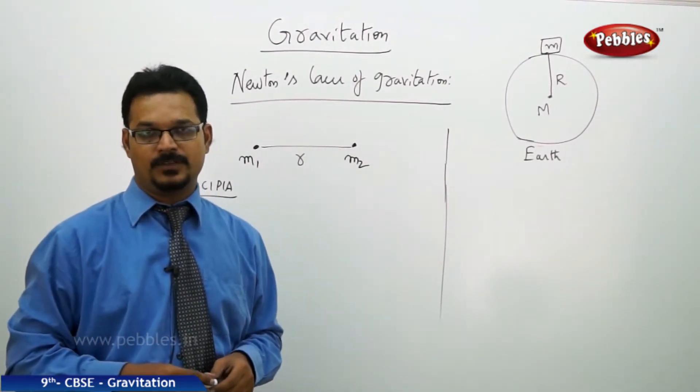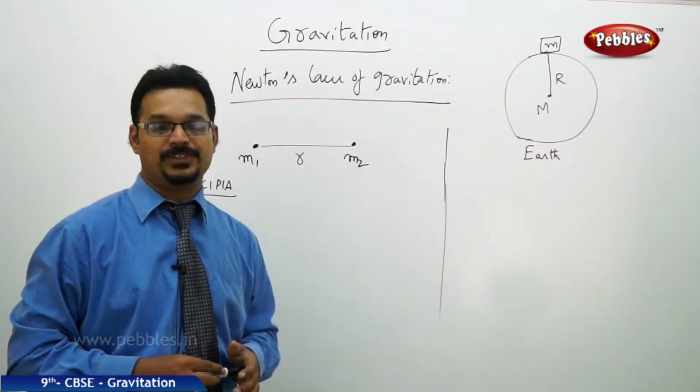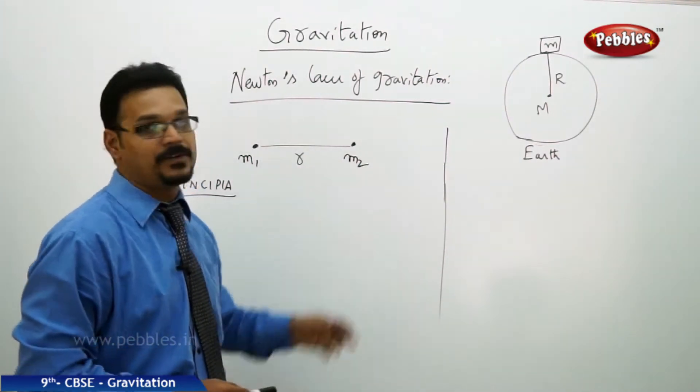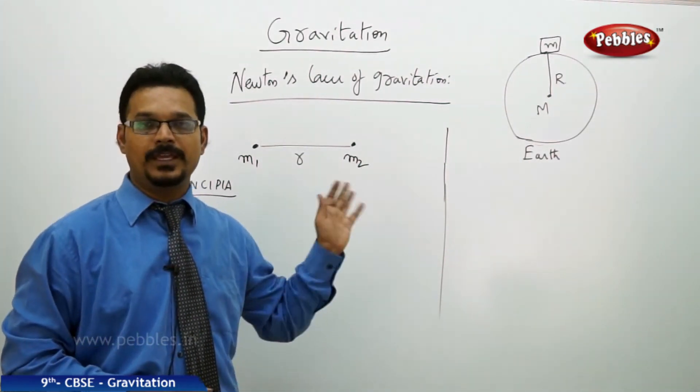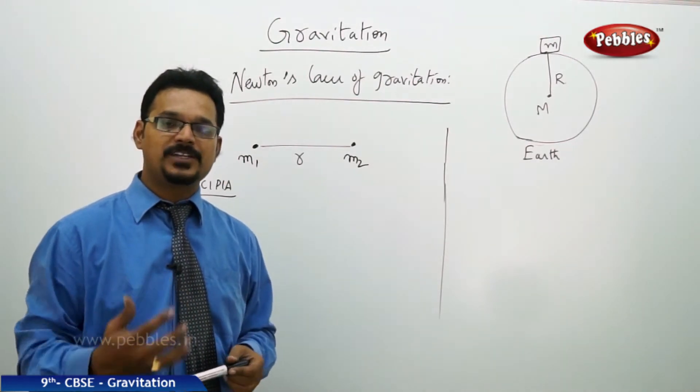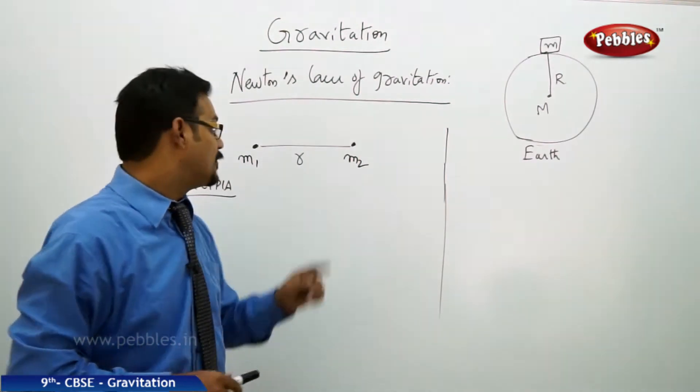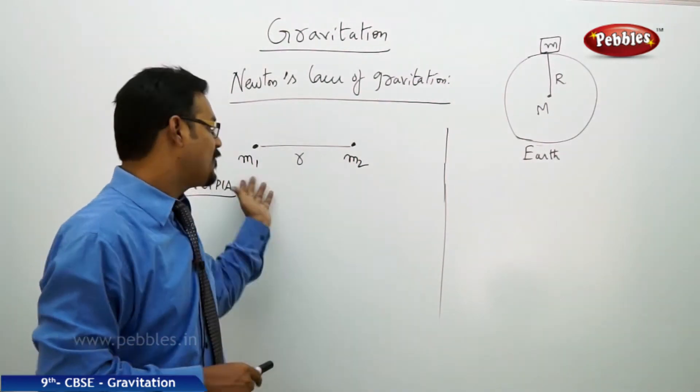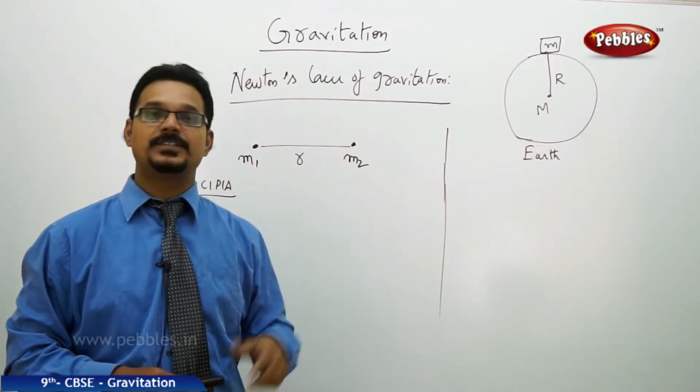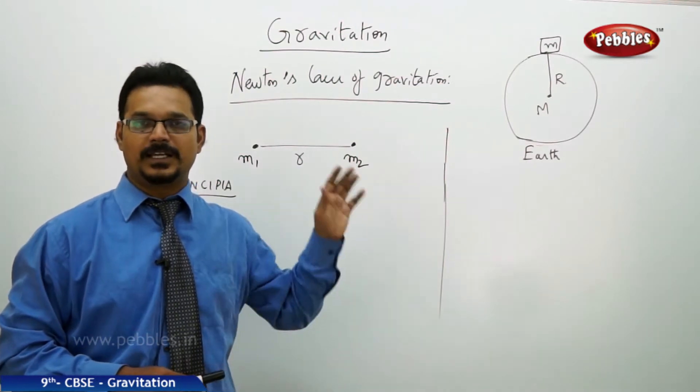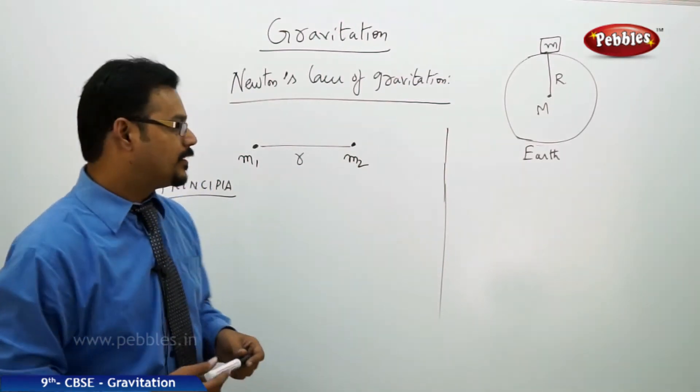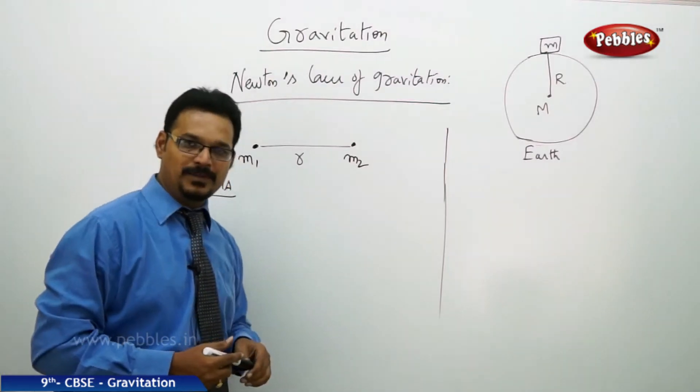Newton is famous for two things: one is laws of motion and second is law of gravitation. He explained that the gravitational force between two massive bodies, which have masses, is attractive. The gravitational force is always attractive between two massive bodies.